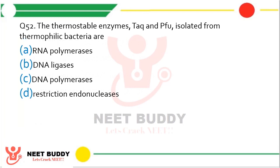Question number 53. The thermostable enzymes Taq and Pfu isolated from thermophilic bacteria are: RNA polymerases, DNA ligases, DNA polymerases, or restriction endonucleases? The correct answer is option C — DNA polymerases.